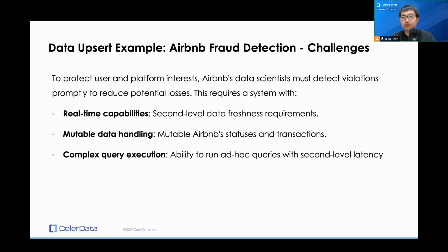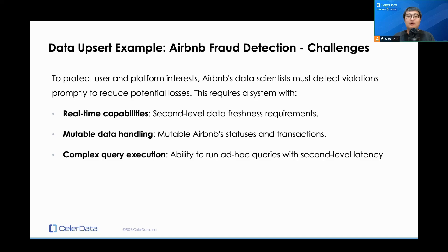There is one real-world example from Airbnb: their fraud detection scenario. To protect their users and their platform's interests, Airbnb's data scientists have to detect violations and fraudulent activities to reduce potential losses and protect their brand. This is a very difficult problem for the following reasons. First, it has to be real-time — they have to catch those violations fast enough before they happen, so second-level data freshness is required. They also have to support mutable data, since Airbnb listing status, hotel status, transactions, and so on are all mutable. And they want really good query performance on very complex, ad hoc queries.